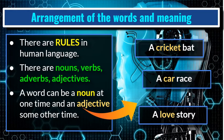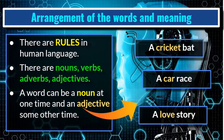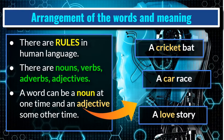There are rules in human language — nouns, verbs, adverbs, adjectives — and a word can be a noun at one time and an adjective at another. For example, in the phrase 'a cricket bat,' cricket is an adjective even though it is normally a noun. Similarly, in 'a car race,' car is used as an adjective. So the arrangement of words and their meaning is important to understand.